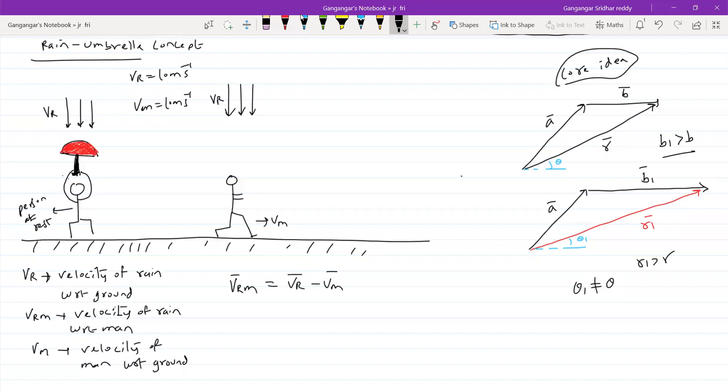We have to calculate this vrm bar. What is vr bar? vr bar is minus 10 j cap, unit vector in negative y axis.